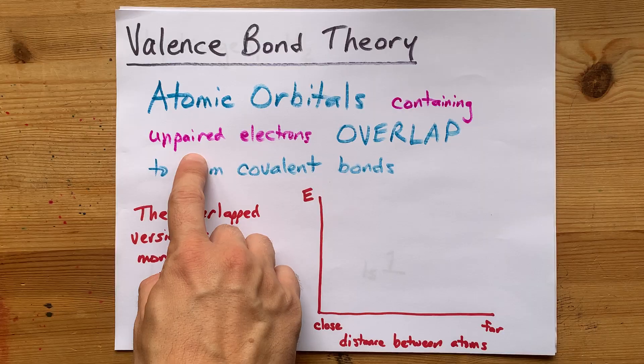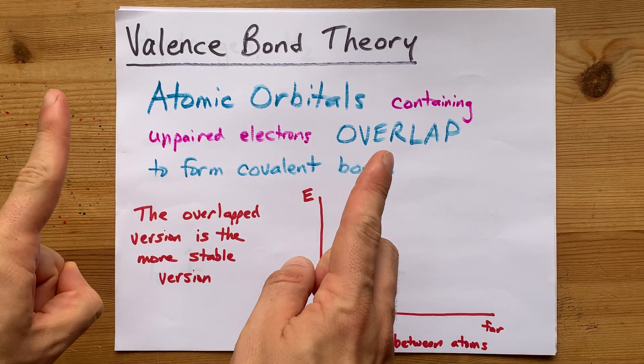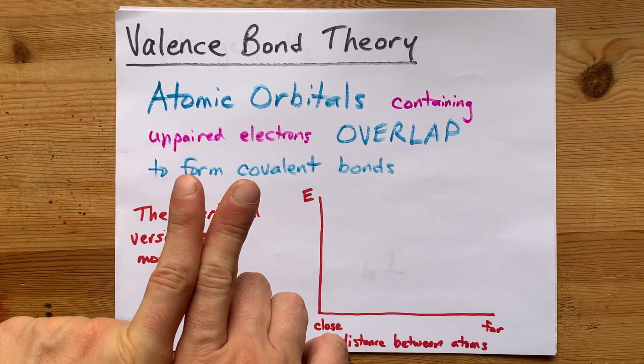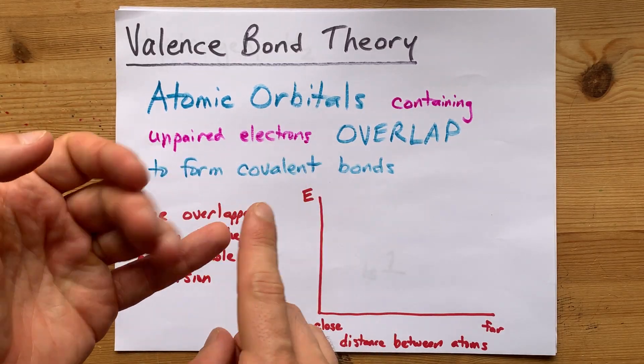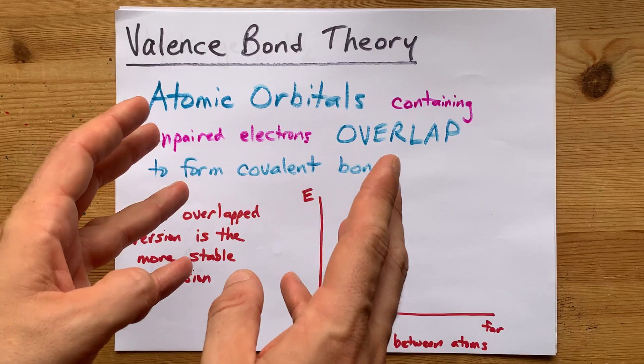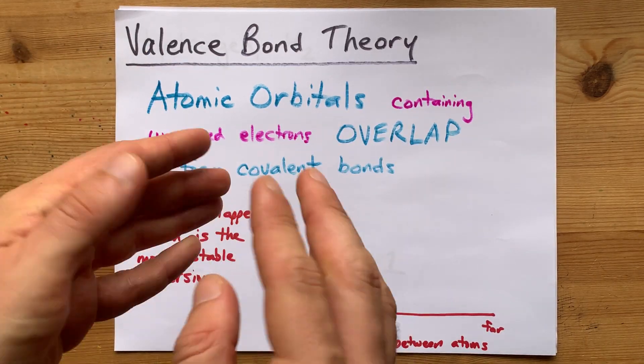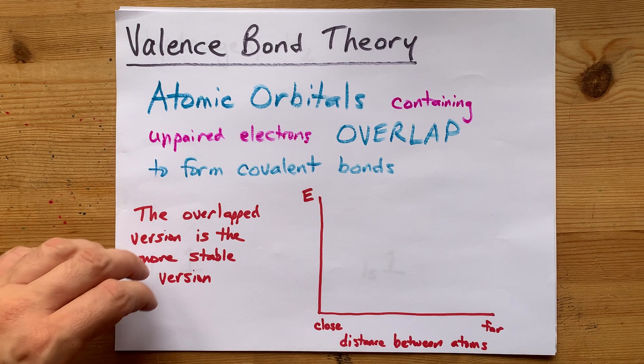The atomic orbitals will have unpaired electrons. Those electrons will want to pair up. And the atomic orbitals, 1s, 2s, 2p, you've heard these things, will physically overlap to form these bonds.